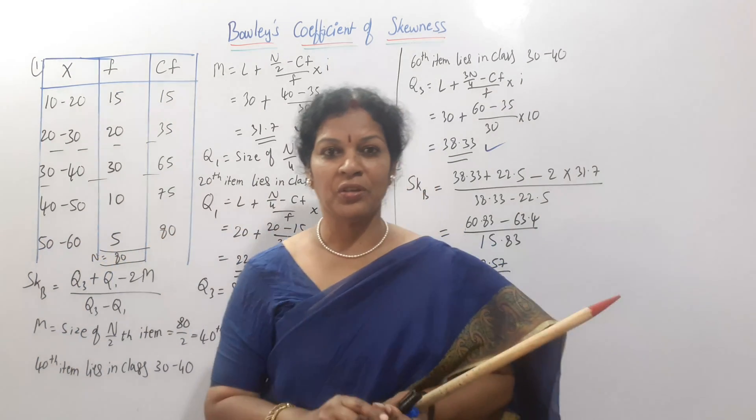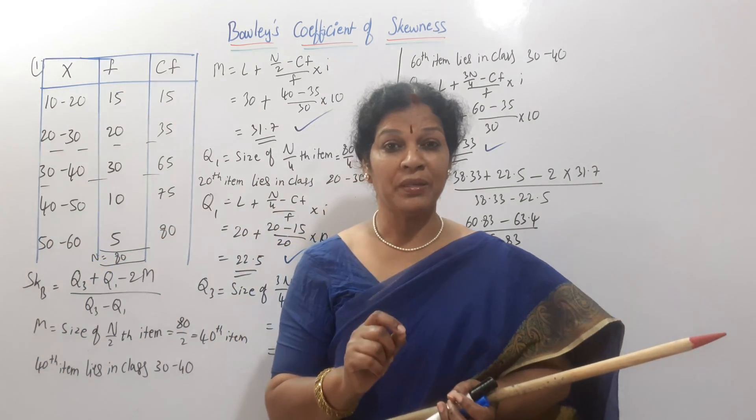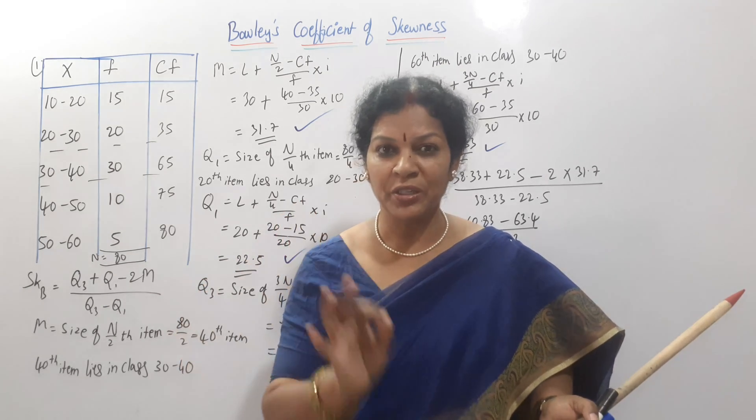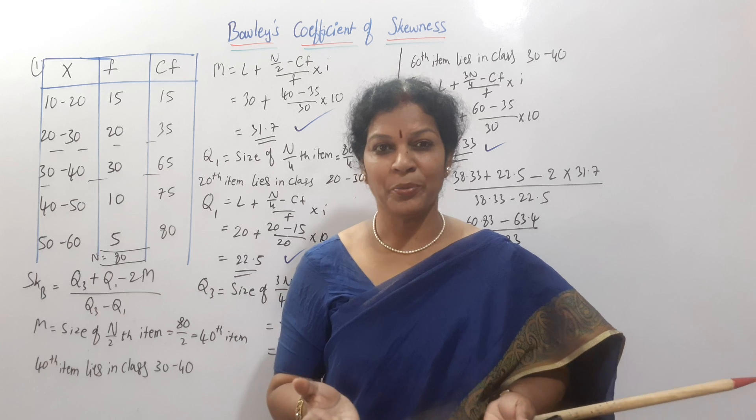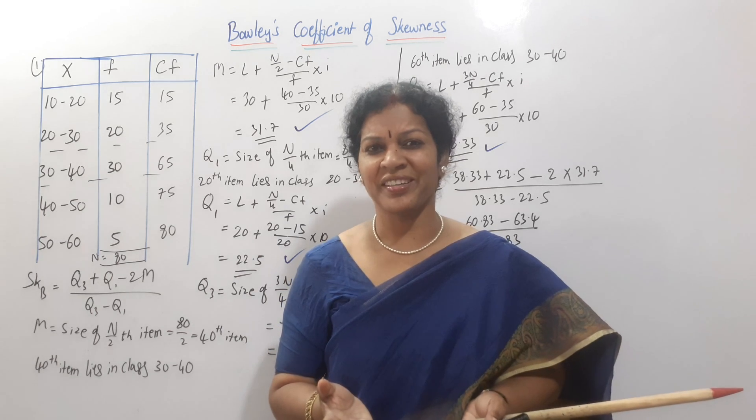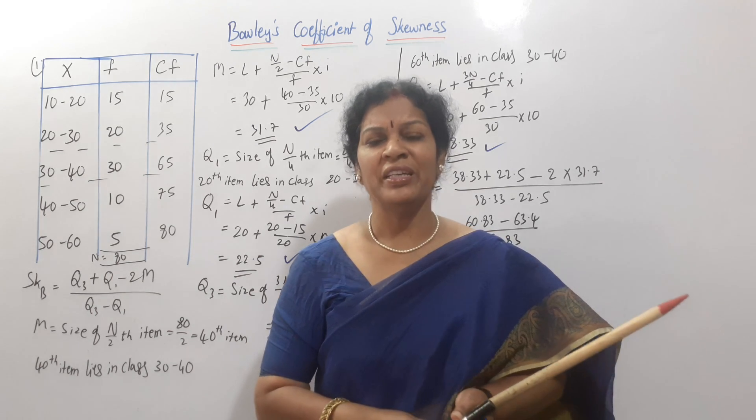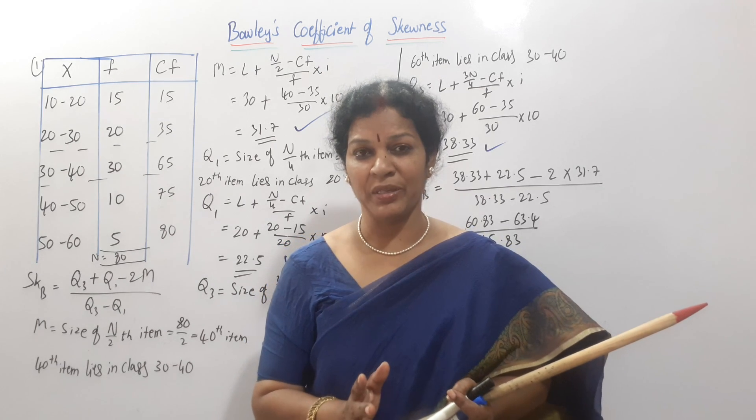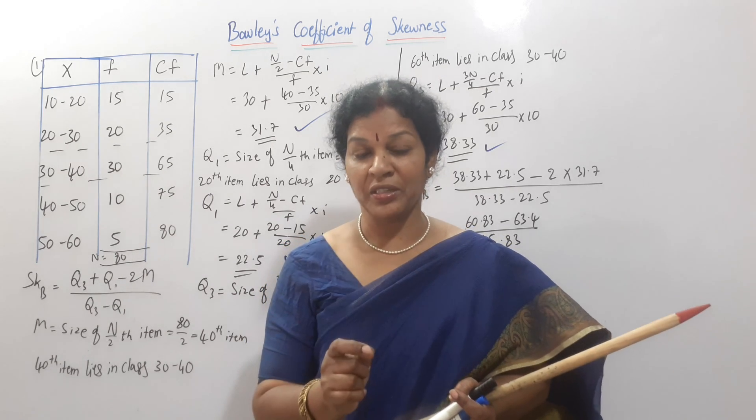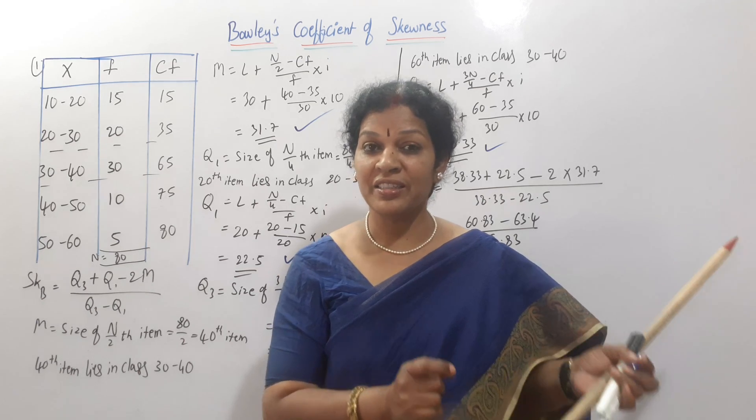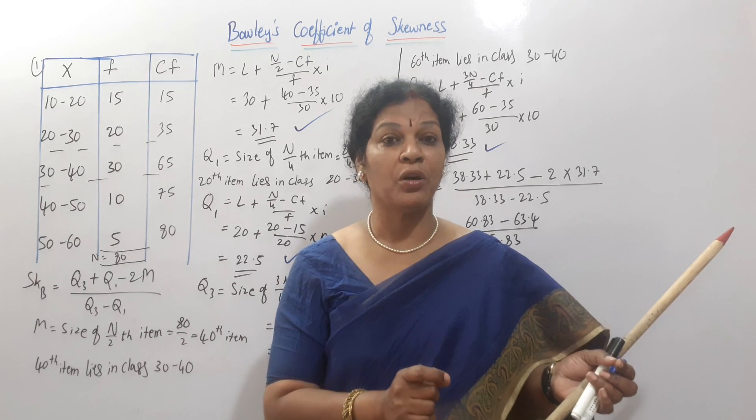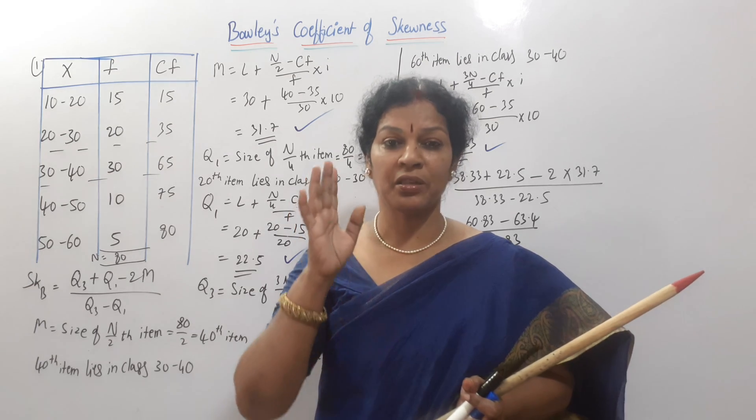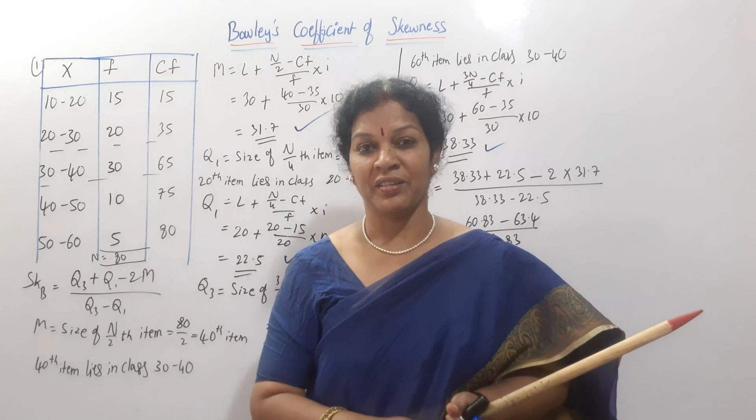There is no question of even skipping or missing of one mark also. If it is 20 marks problem, 20 you have to get. Because easy problem, no? Scoring. So, don't miss this problem. In exam, if skewness is there in your syllabus, one question, 100% you can expect either the Carl Pearson's coefficient of skewness or Bowles' coefficient of skewness. Any one you can expect it. 100% you can.